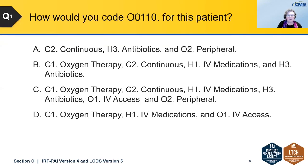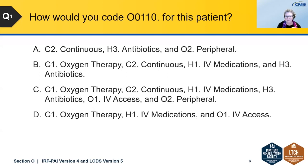How would you code O-0-1-10 for this patient? Is it A: C2 continuous, H3 antibiotics, and O2 peripheral? Or B: C1 oxygen therapy, C2 continuous, H1 IV medications, and H3 antibiotics? Or C: C1, C2, H1 medications, H3 antibiotics, O1 IV access, and O2 peripheral? Or D: C1, H1 IV medications, and O1 IV access? I'll give you a few minutes to consider that and respond to the poll.